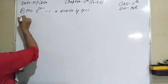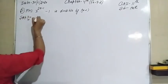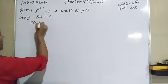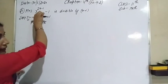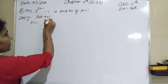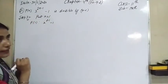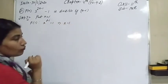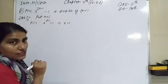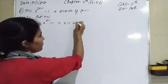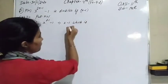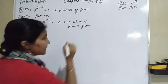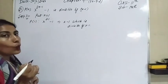In Step 1, we always put n equal to 1. So here P(1) is the statement: x raised to the power 2 into 1, that is 2, minus 1, minus 1. It becomes x raised to the power 1, that is x minus 1, which is obviously divisible by x minus 1. So the result is true for n equal to 1.